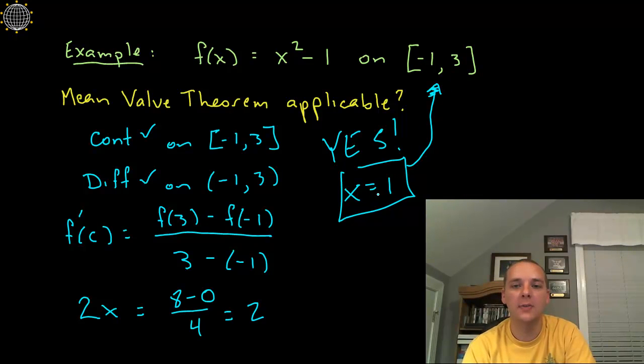So this is the x value whose slope exactly at 1 agrees with the average slope from minus 1 to 3 for this function.